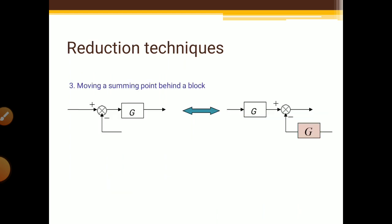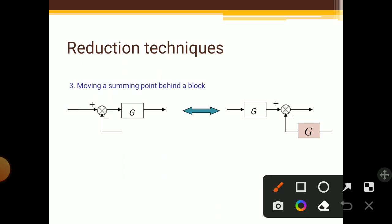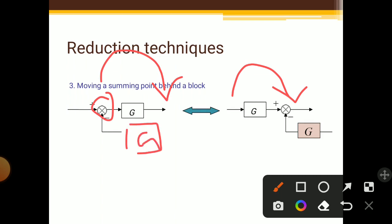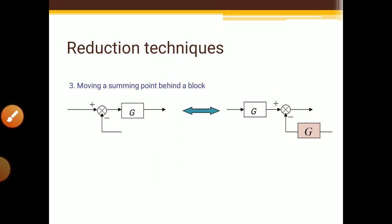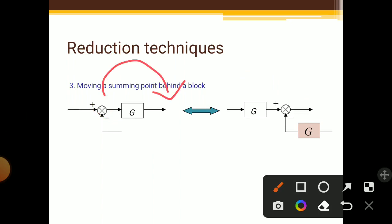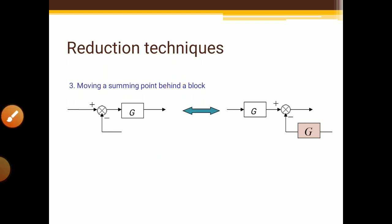The third important rule is moving a summing point behind a block. You can shift the summing point behind the block, but you have to add one more block having the same value as the block you are crossing. Suppose you are crossing a block with value G — you have to add that same block G in the parallel line of the summing point as an extra block while shifting.